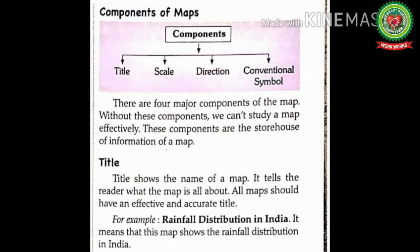Next we have Components of Maps — meaning elements of Maps. The components of Maps are title, scale, direction, and conventional symbol. There are four major components of the map; without these components, we can't study a map effectively — effectively means successfully. These components are the storehouse of information of a Map. Now we will discuss the first component of the map: Title.